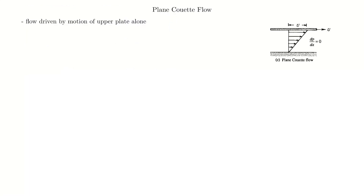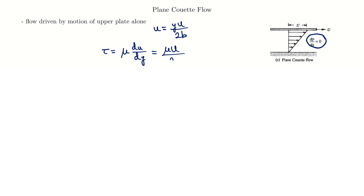In plane Couette flow the flow is driven by the motion of the upper plate alone — there's no pressure gradient. Substituting dp/dx equals zero into our velocity profile, it simplifies to a nice linear velocity profile in y. We can also look at the shear stress: for a Newtonian fluid, shear stress is mu times du/dy. Taking the derivative of our linear velocity profile with respect to y gives us a shear stress that is not a function of y — so we have uniform shear stress across the entire channel. This makes physical sense: with a linear profile all neighboring fluid particles experience that same slightly different velocity, so the shear is the same everywhere.